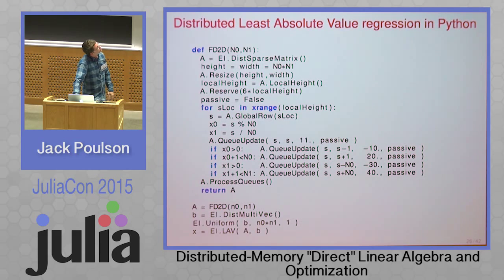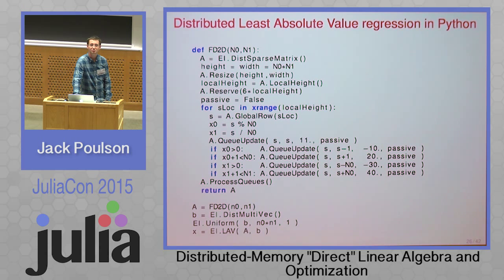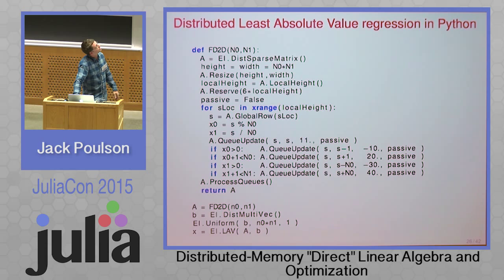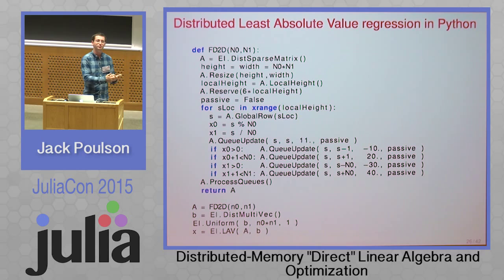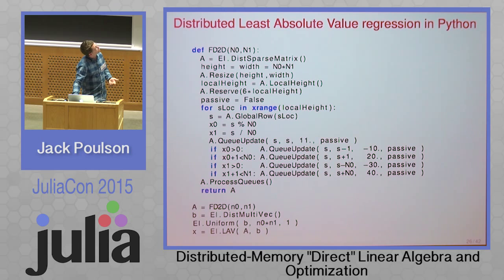I'll start with a Python example of what that process would look like, then show a Julia example on the next slide — it's basically the same. If you wanted to construct a 2D finite difference matrix with this interface, you declare A as some distributed sparse matrix, compute the height and width (for an n0-by-n1 grid you'd have n0*n1 indices in rows and columns), and resize the matrix to that.